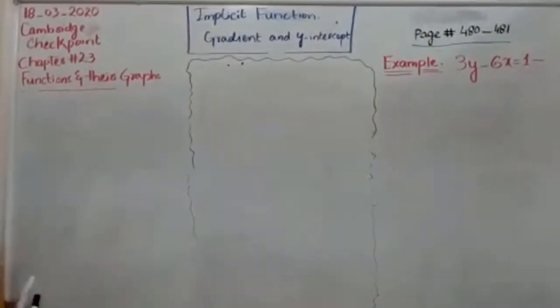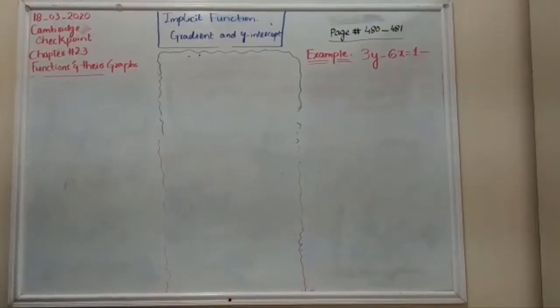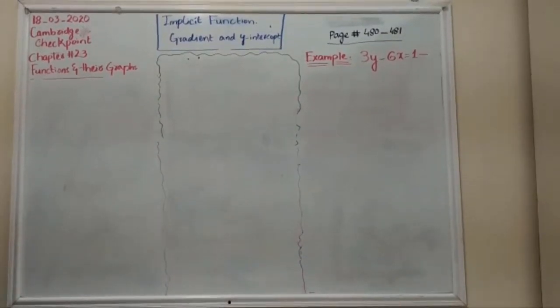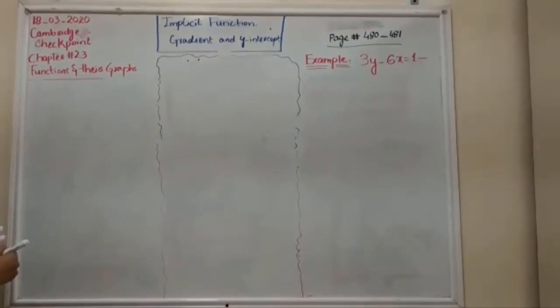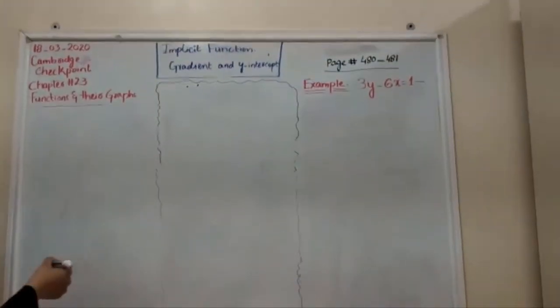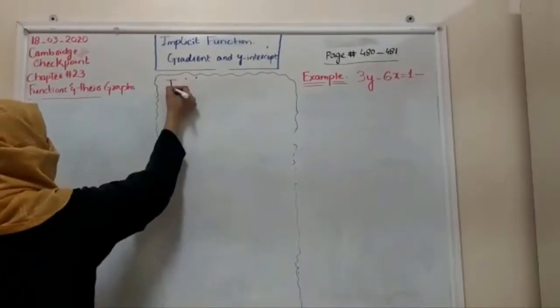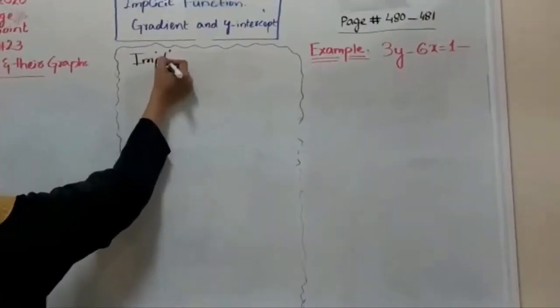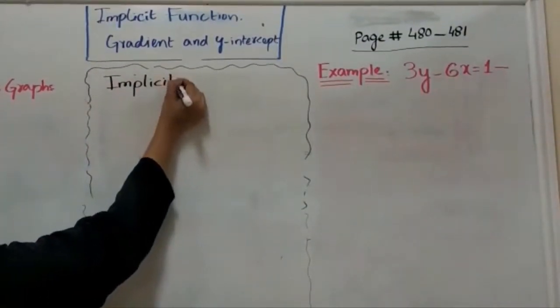Let's start. Before going to start this topic, I'm going to make a rule or the method for you guys. Implicit function - do you remember the implicit function? So implicit function is one in which you cannot split the dependent variable with the independent.